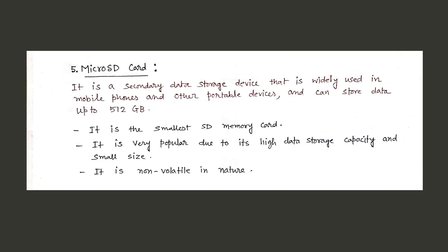A Micro SD card is a secondary data storage device widely used in mobile phones and other portable devices and can store data up to 512 GB. It is the smallest SD memory card. It is very popular due to its high data storage capacity and small size. It is also non-volatile in nature.